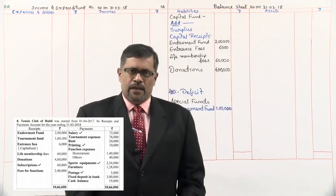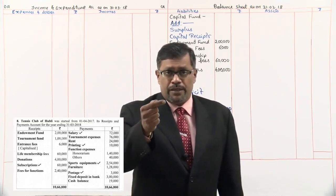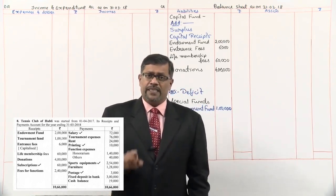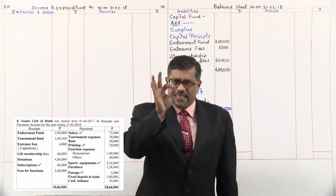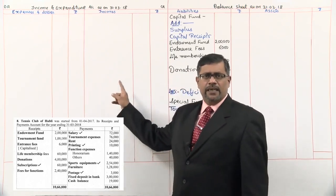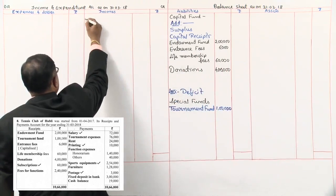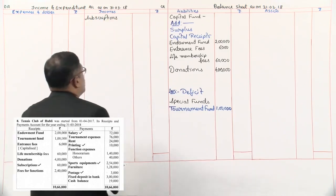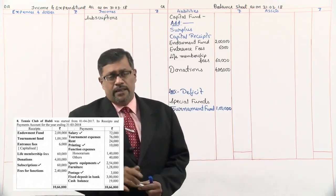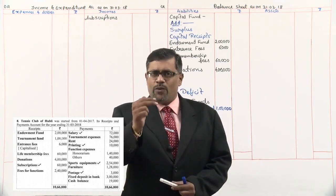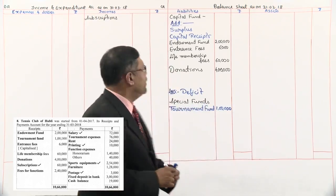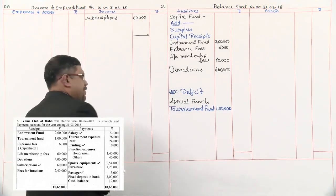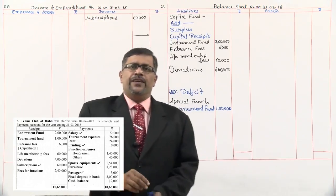Next, subscriptions — subscriptions are the annual membership fees received from members every year. Since it is recurring in nature, it is not a capital item; it is a revenue receipt. We'll enter it in the income and expenditure account. This subscription has a tick mark, meaning there is an adjustment on it. We'll take subscriptions in the inner column — 60,000 — and leave a couple of lines so the adjustment can be done later.